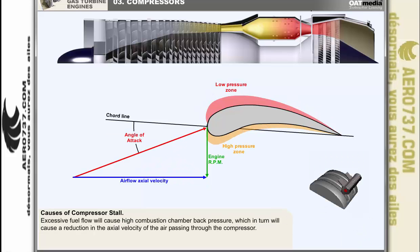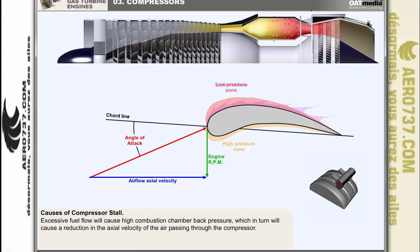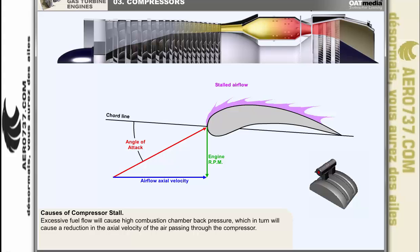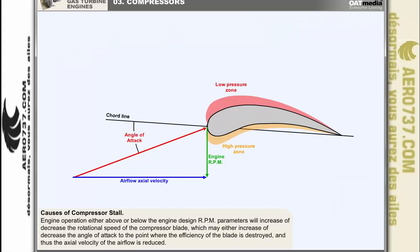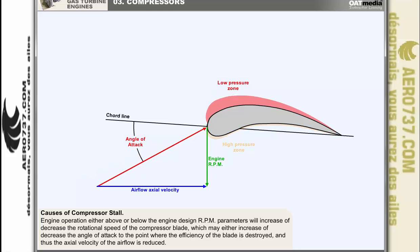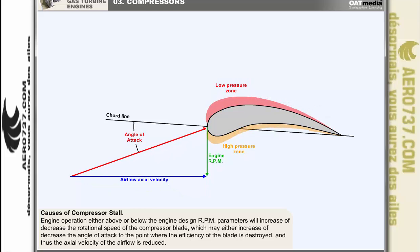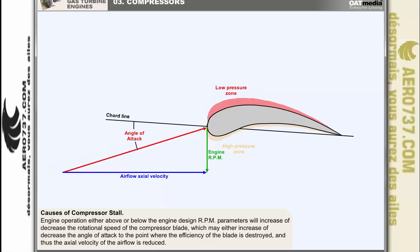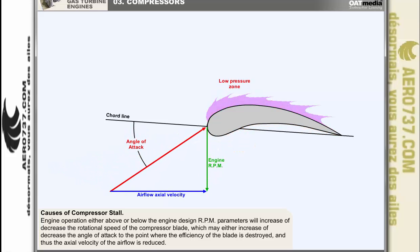Excessive fuel flow, which may be caused by abrupt throttle opening during an attempt to gain rapid engine acceleration, can cause the back pressure generated in the combustion chamber to rise to the extent that it will cause a reduction in the axial velocity of the air passing through the compressor. Engine operation either above or below the engine design RPM parameters — engine overspeed or underspeed — will increase or decrease the rotational speed of the compressor blades, which may increase or decrease the angle of attack to the point where the efficiency of the blade is destroyed and the axial velocity of the airflow is reduced.